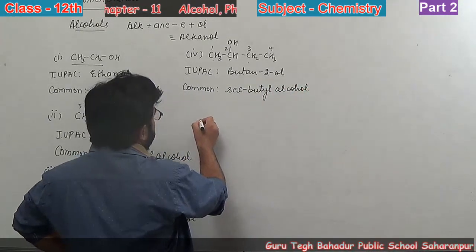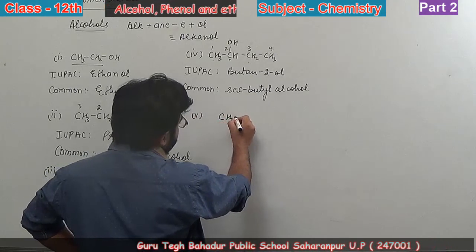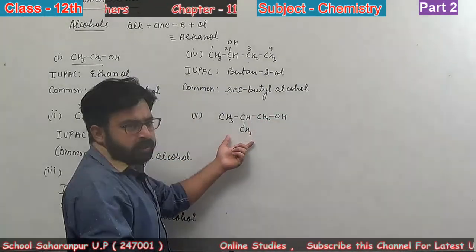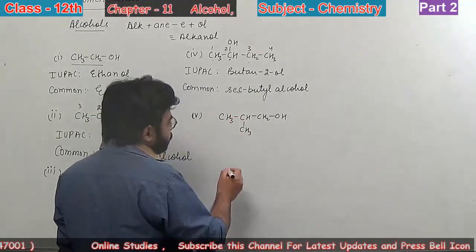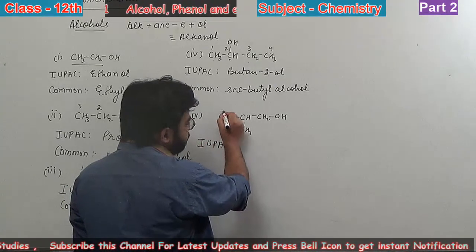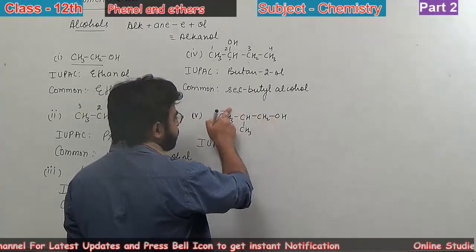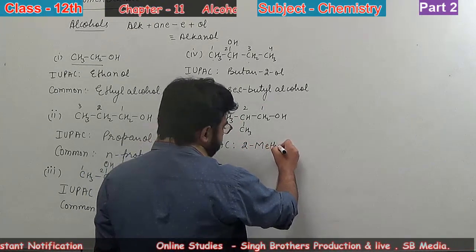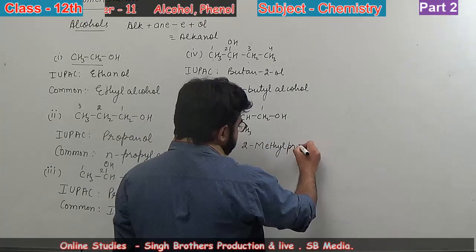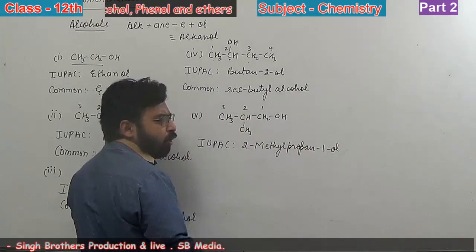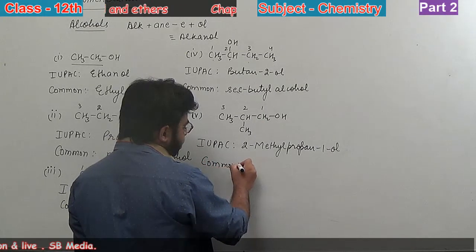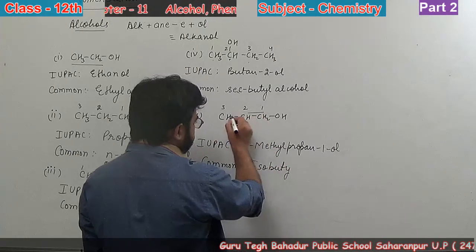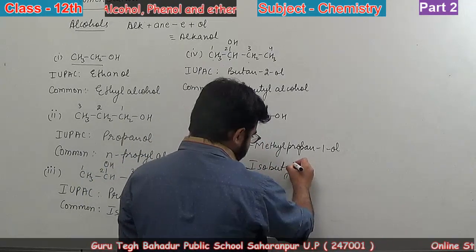Fifth one is CH3-CH(CH3)-CH2-OH. There are also four carbons here. For IUPAC name, the longest chain is three carbons. We give preference to OH, so numbering is one, two, three. Methyl group is at position two. So 2-methylpropan-1-ol, or simply 2-methylpropanol. Common name - the alkyl group is isobutyl, so isobutyl alcohol.